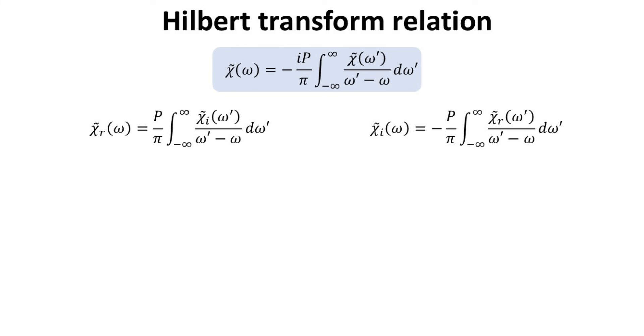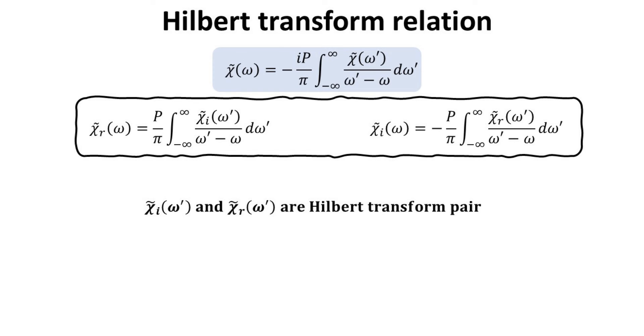Let us write chi tilde in terms of its real and imaginary parts as shown. We identify that this pair of equations are the Hilbert transform pair. We will provide concrete examples of Hilbert transform pairs in the next chapter.